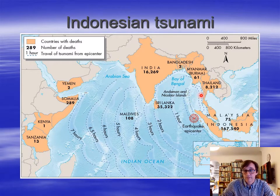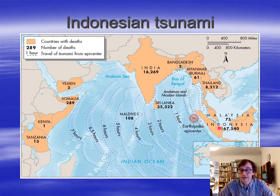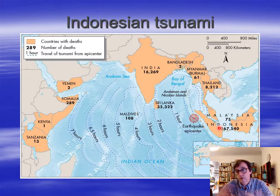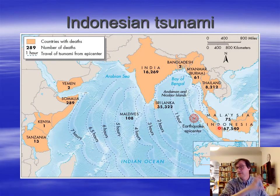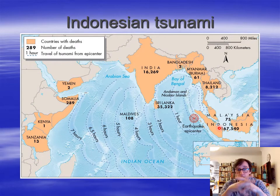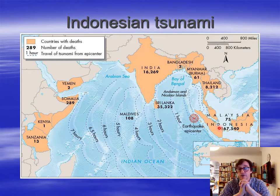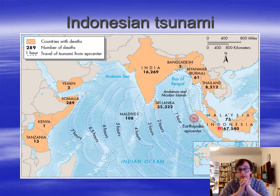Other countries — Burma, Bangladesh, Malaysia — so it affected a whole ocean basin, and tsunamis do. This could have been prevented by something called a tsunami warning system, which was already set up in the Pacific Ocean since the 1950s, and got gradually better in the Pacific. The Indian Ocean didn't have one at this point — it does have now, that's the good news, but it didn't back then.